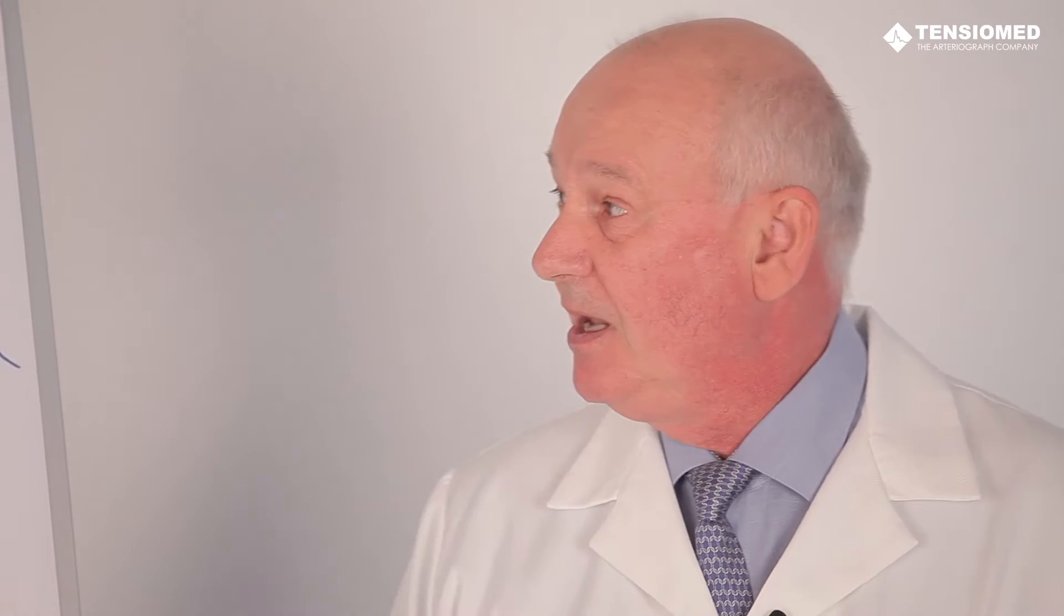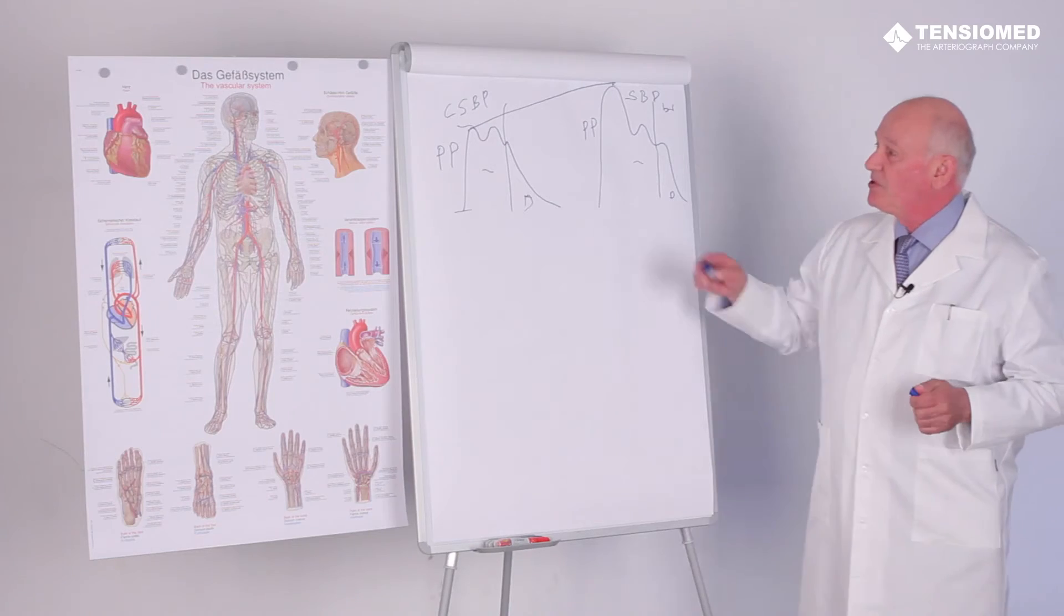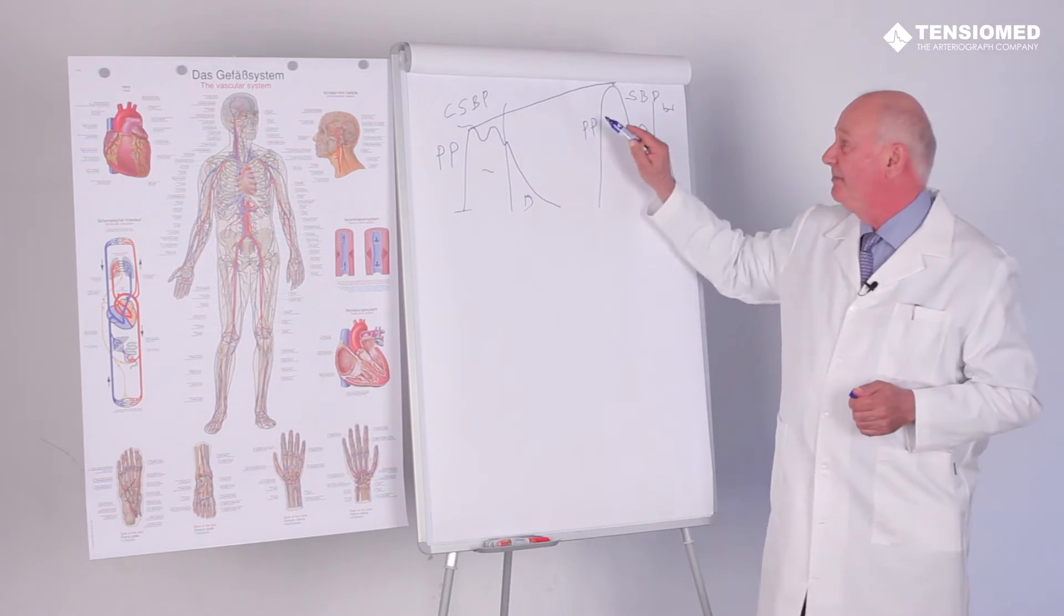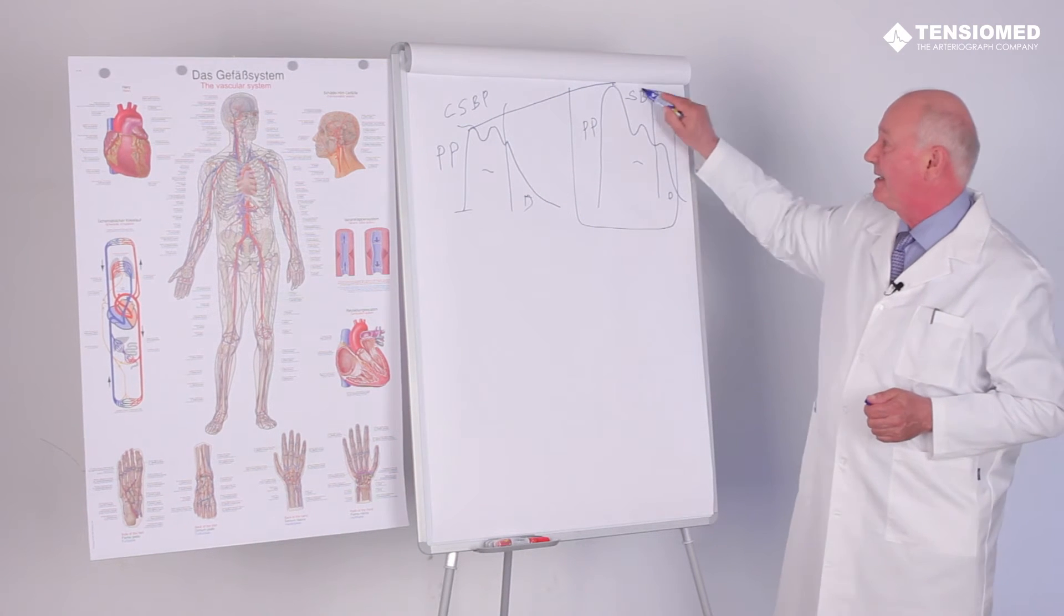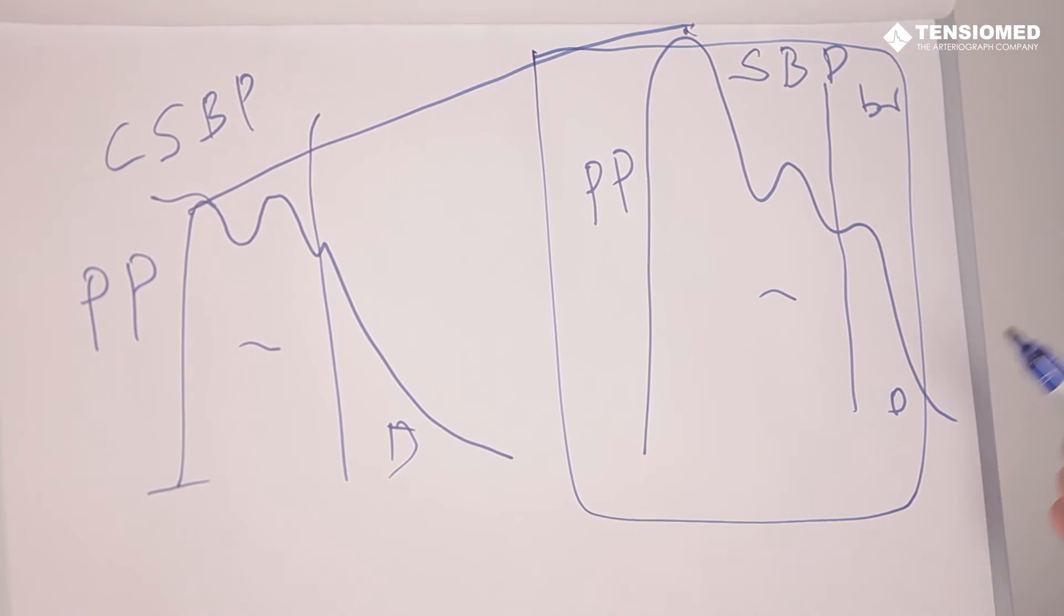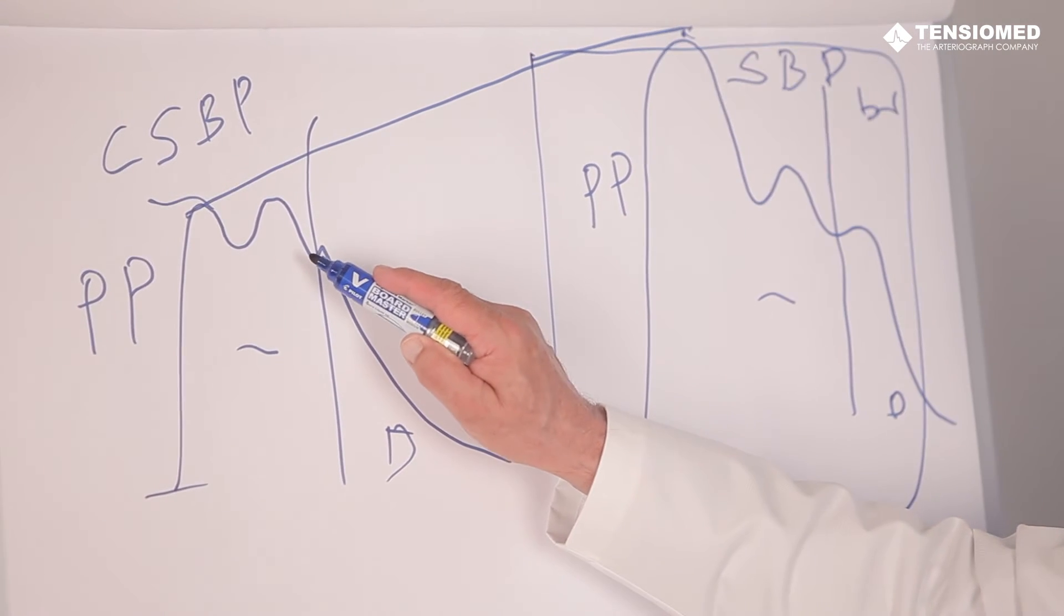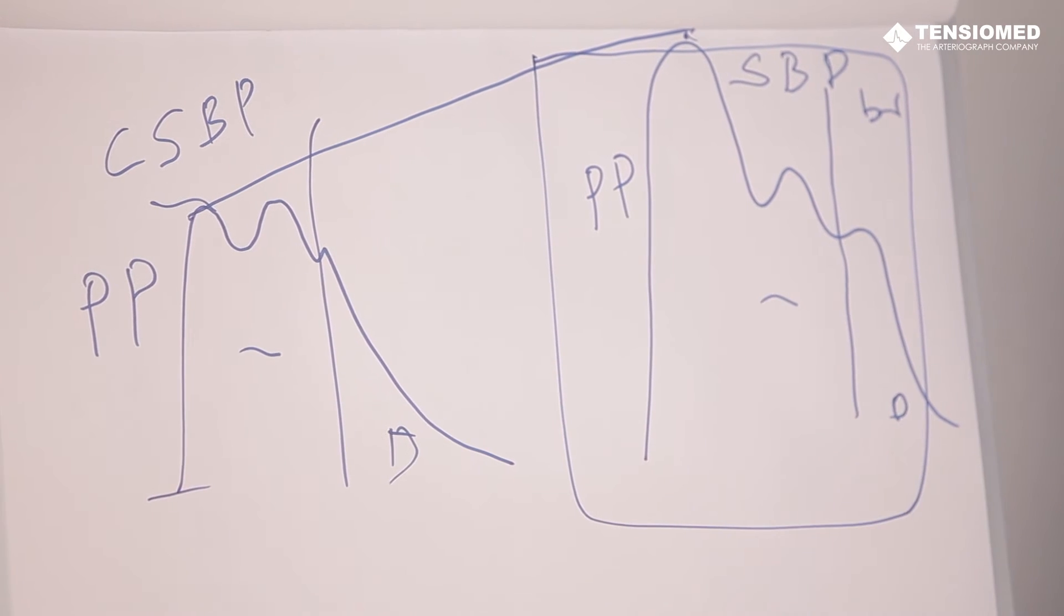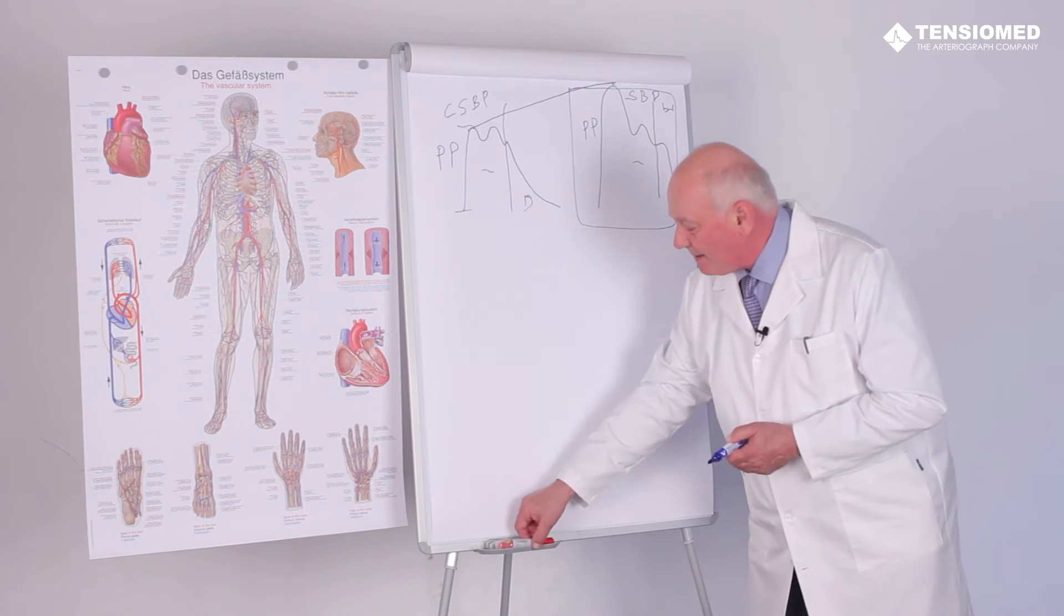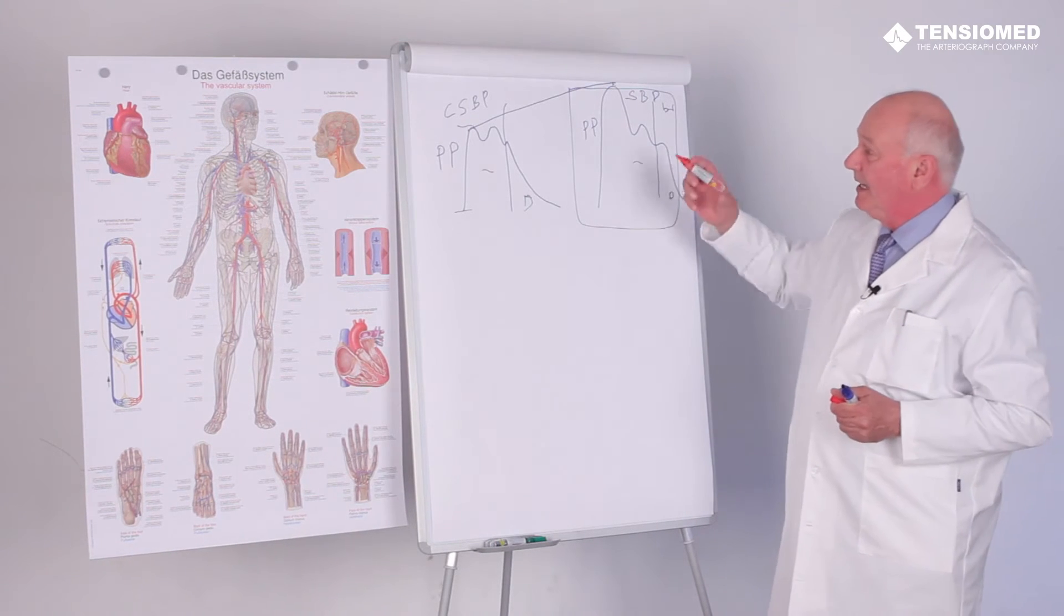Unfortunately, if we measure peripheral blood pressure, which is taken daily, we have no chance to judge the aortic central blood pressure. In a very simple way, look at what will happen if there is increased peripheral vascular resistance.